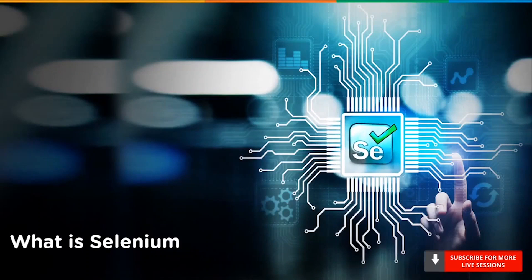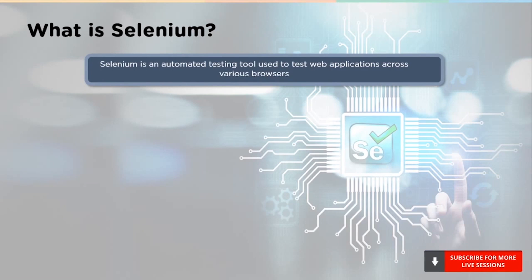So what exactly is Selenium? Selenium is an automation testing tool used to test web applications across various browsers. It can only test web applications and requires other tools to test desktop and mobile applications. Now let's look at some of its features.